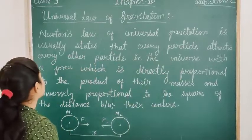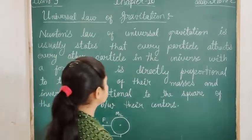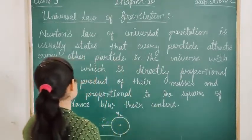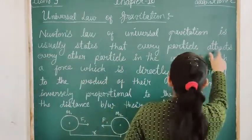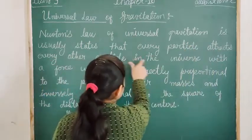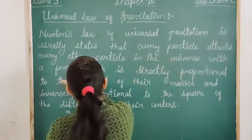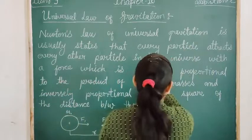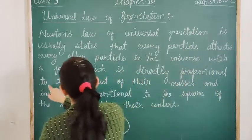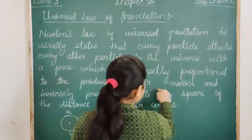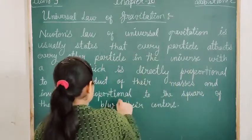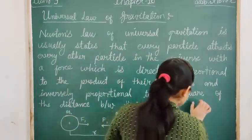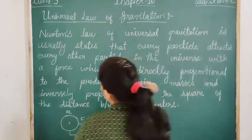Newton's Law of Universal Gravitation states that every particle attracts every other particle in the universe with a force which is directly proportional to the product of their masses and inversely proportional to the square of the distance between their centers.